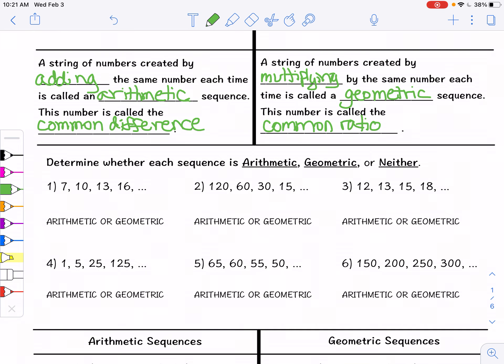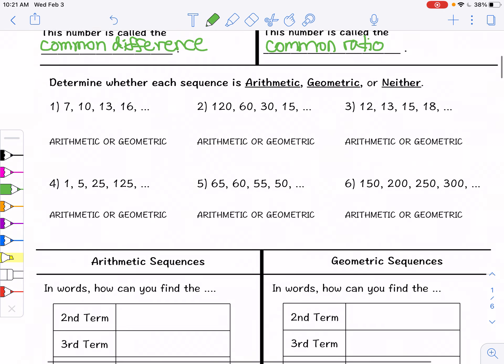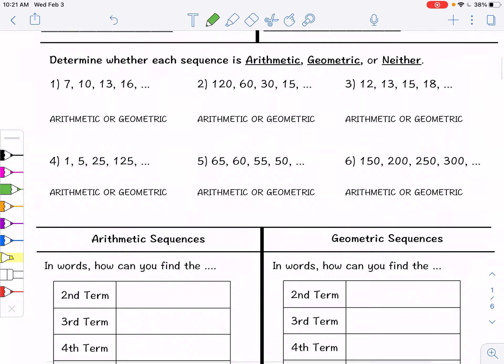So first we're going to determine whether each sequence is arithmetic, geometric, or neither. If there is no common difference or common ratio then it is definitely neither. So taking a look at this I have 7, 10, 13, and 16. To go from one to the other I add 3 every single time. Because we're adding the same thing over and over again we have a common difference, so that is arithmetic.